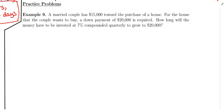Example nine is going to be another compound interest problem where we're solving for time. A married couple has fifteen thousand dollars toward the purchase of a house. A down payment of twenty thousand dollars is required. How long will the money have to be invested at seven percent compounded quarterly to grow to twenty thousand dollars?